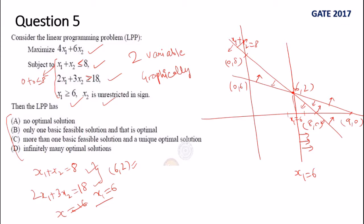Let's see which region do we get. x₁ ≥ 6 means this was the region, and for this line...